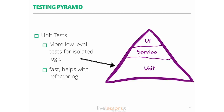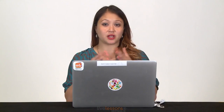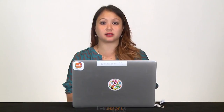The bottom of the pyramid is what we call unit tests. These are low-level tests for isolated logic, and they are really fast. They also help with refactoring, which we'll cover in a later section. Unit tests are modular and test only the logic within a specific module. Unlike integration tests, which test communication between modules, unit tests focus on logic within a single module — for example, a login class within the login service, with a series of unit tests covering different permutations of login functionality.